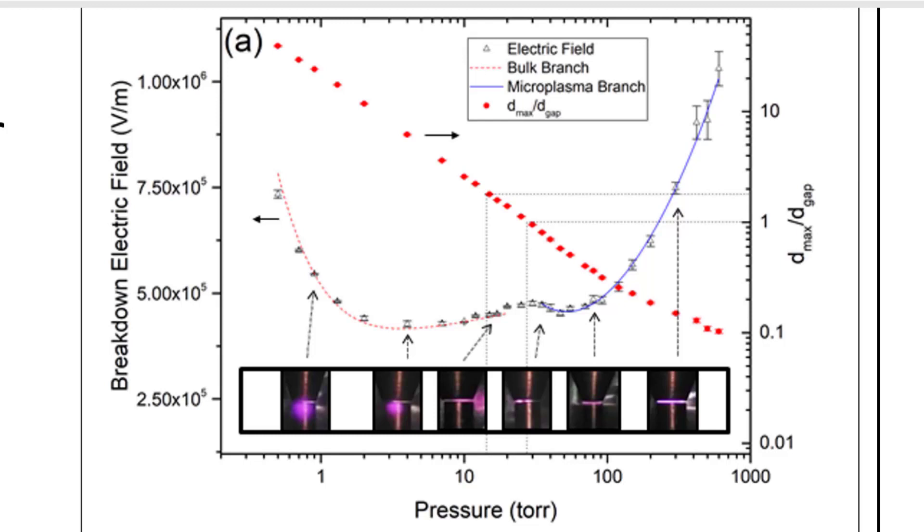Also included with this breakdown curve is the maximum gap size for wall loss divided by the size of the gap. When that ratio equals one, you are at a pressure below which breakdown cannot happen in the gap, and if you follow where it's one, you see that's exactly where the transition occurs.